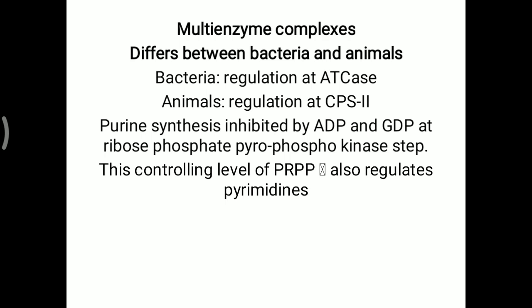PRPP is common to both purine and pyrimidine synthesis. For simple pyrimidine regulation, remember the mnemonic CAD: C means CPS2, A means ATCase (ATC), and D means dihydroorotase enzyme. That's all about pyrimidine regulation.